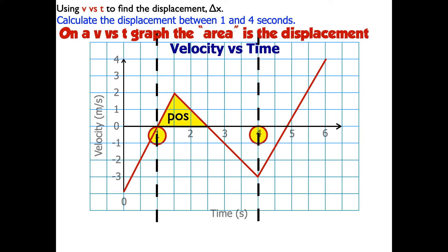The next area I'm going to find is between 2½ and 4 seconds, and it's again going between the curve — and this time it's going to go up, not down, but up, because it's between the curve and the axis. So curve to axis. And this one's going to have a negative area, because its height is going to be negative 3 meters per second.